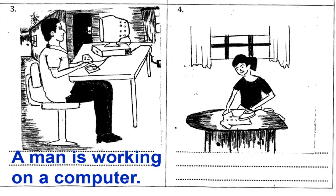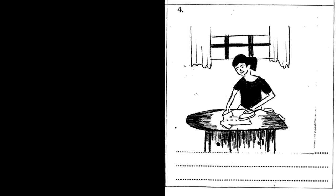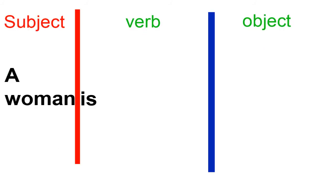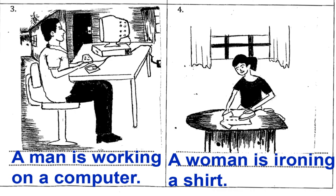Kriyava. A woman. This is a be verb: woman is. The verb is 'iron,' in the -ing form, 'ironing.' A woman is ironing a shirt.